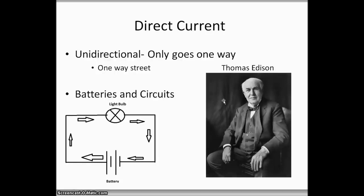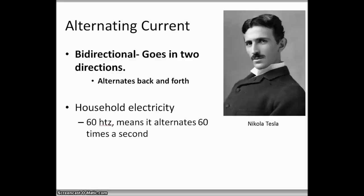But what happened is this man came along, and his name was Nikola Tesla, and he came up with this thing called alternating current. Nikola Tesla actually now has a car named after him, the Tesla.